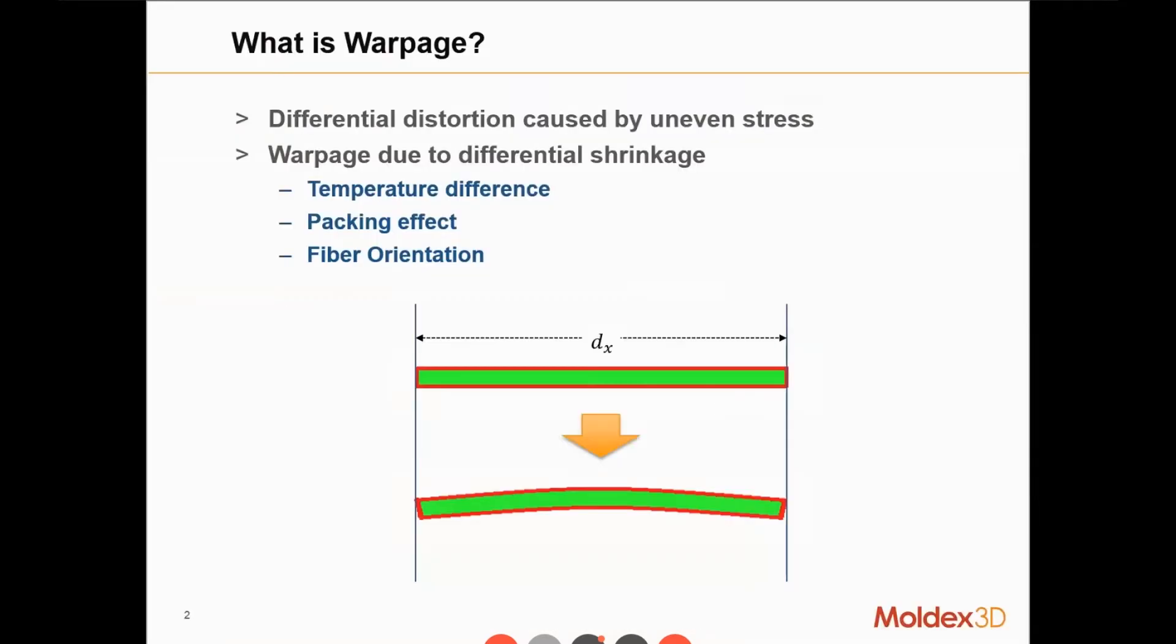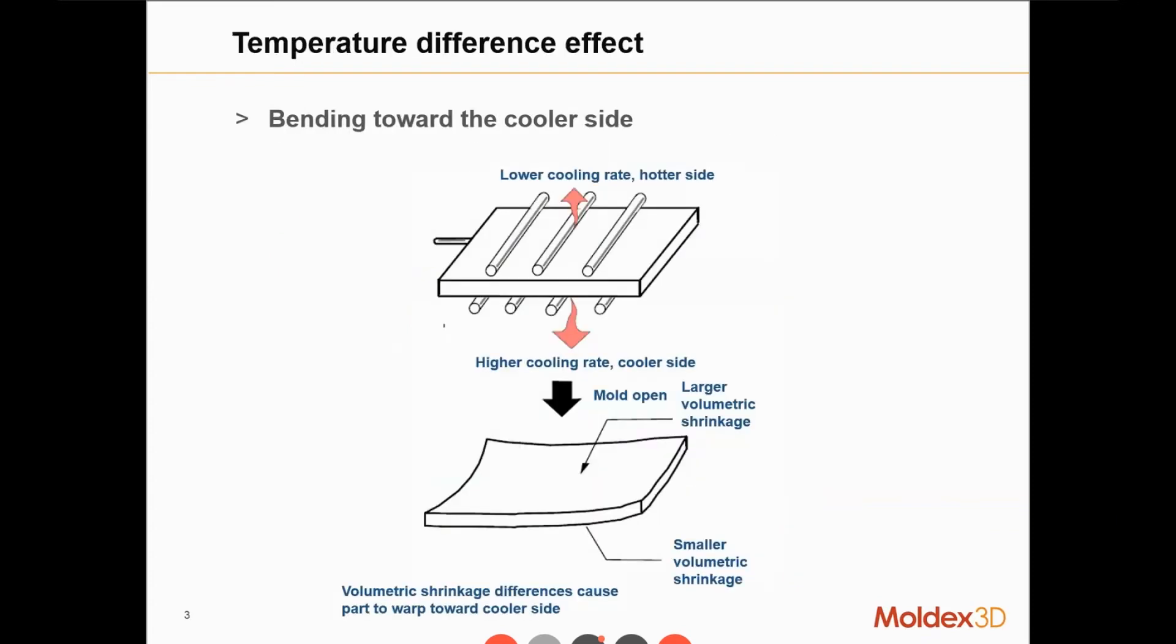When it comes to warpage and shrinkage, we need to consider the main causes. Let's first introduce what is warpage. Warpage is caused by differential distortion. You can see this plate sample that warps downward. The uneven stress leads to shrinkage, causing the part to warp downward. There are three main causes of warpage: temperature difference, packing effect, and fiber orientation.